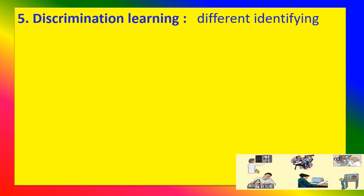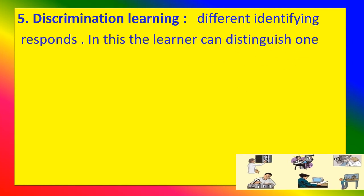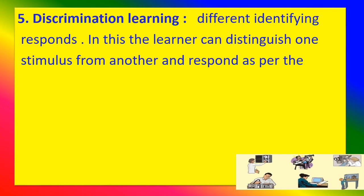Type 5: Discrimination Learning. The learner identifies different responses and distinguishes one stimulus from another, responding according to the change in stimulus.